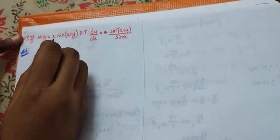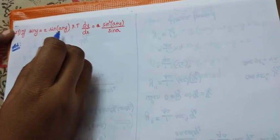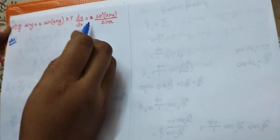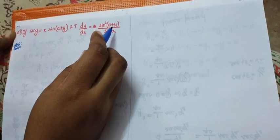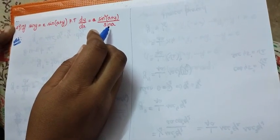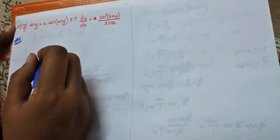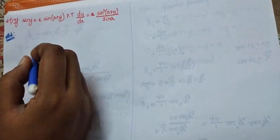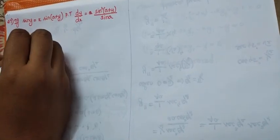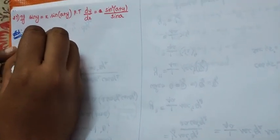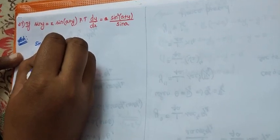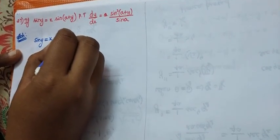If sin y equals x·sin(a+y), prove that dy/dx equals sin squared of (a+y) divided by sin a. So, sin y is equal to x·sin(a+y).